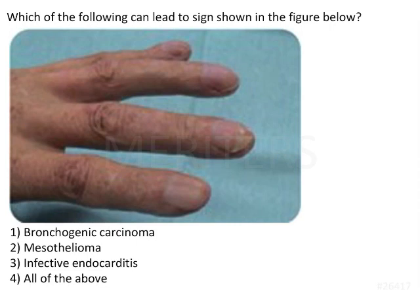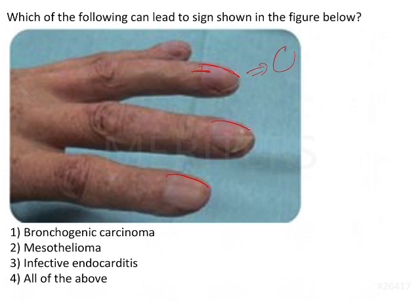Looking at the sign shown in the figure, you can appreciate the convex nail plate. There is also a loss of the angle between the lunula — the lower part of the nail plate — and the proximal nail fold. This particular condition is clubbing.